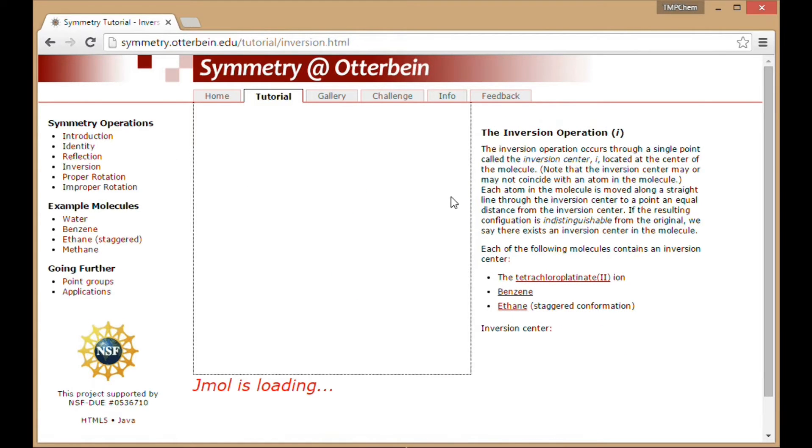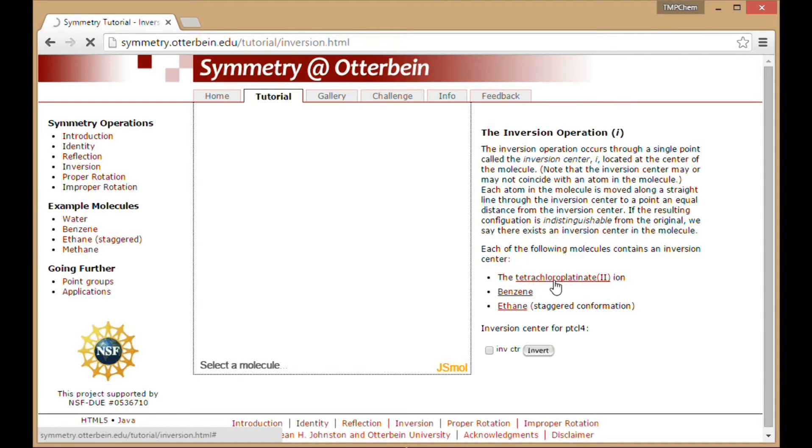Inversion. Some kind of platinum object. This looks like we've got a kind of square planar object. So the inversion center is going to be that central platinum atom. You see all of the atoms become their opposites through that point. They invert through that point. That's the inversion center.